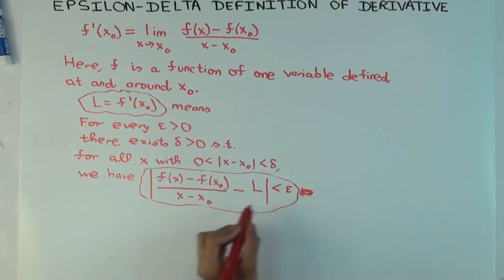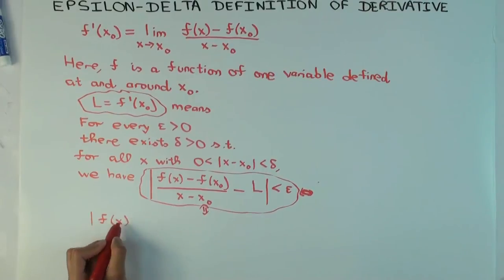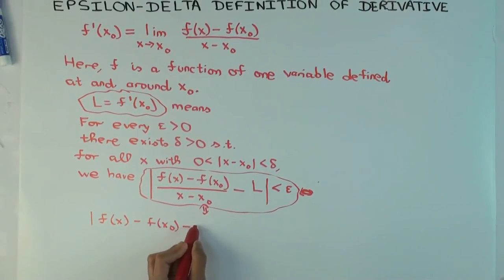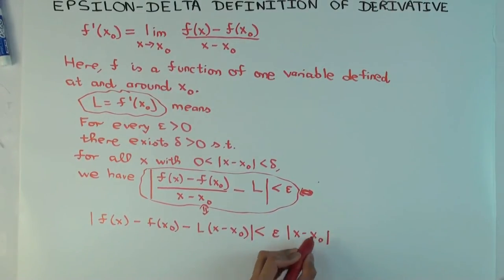It's the same as saying, oh, I guess I'll run out of space here, so I'll just do it down here. fx minus fx naught minus l times x minus x naught is less than what? That, epsilon times the absolute value of x minus x naught. Okay.